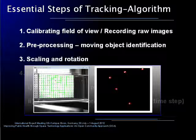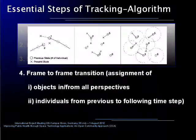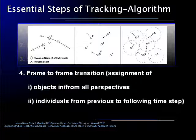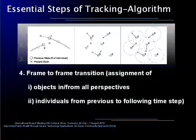In a third step, coordinates and probably sizes will be scaled and rotated to the reference system. After scaling and rotating of the object coordinates, the most difficult step follows: the assignment of objects in one frame to the identical objects in another frame. As I tried to visualize with this sketch, it is not straightforward to just take the nearest neighbors. With the constraint assignment algorithm, however, it is possible to compute the three-dimensional coordinates out of multiple camera perspectives and also to track individuals over time in the recorded sequences.